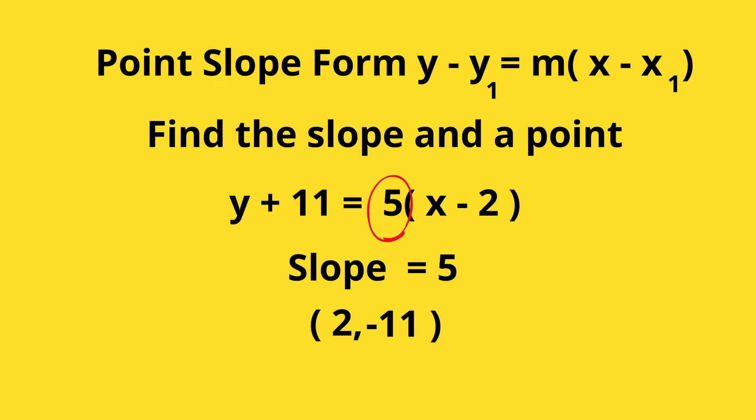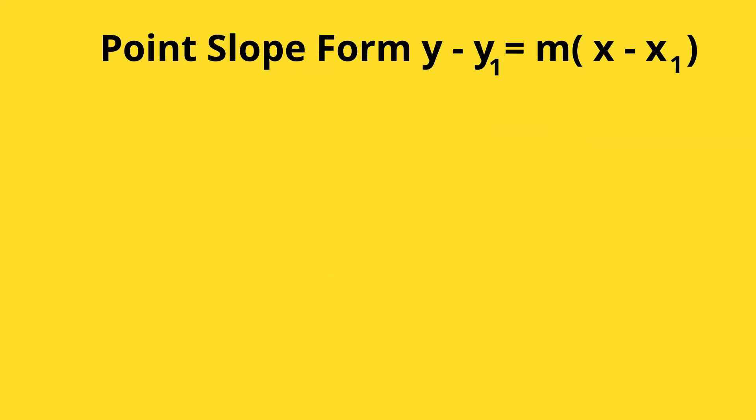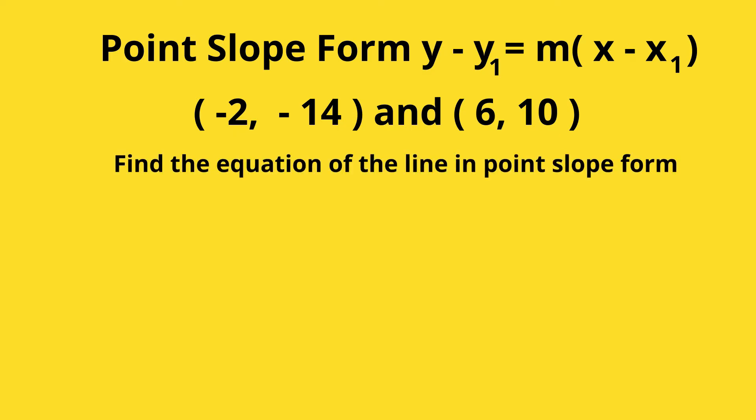Now, how about a question like this? A line passes through the points (-2, -14) and (6, 10). Find the equation of the line and write it in point-slope form. Let's first find the slope by using the slope formula: y₂ minus y₁ over x₂ minus x₁.